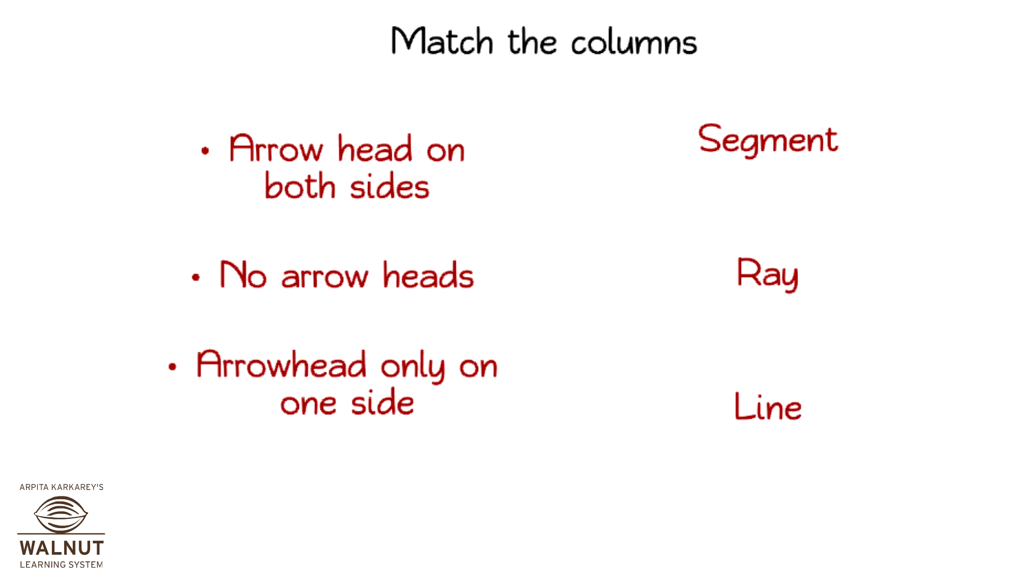Match the columns. Arrowheads on both sides is a line. No arrowheads is a segment. Arrowhead only on one side is a ray.